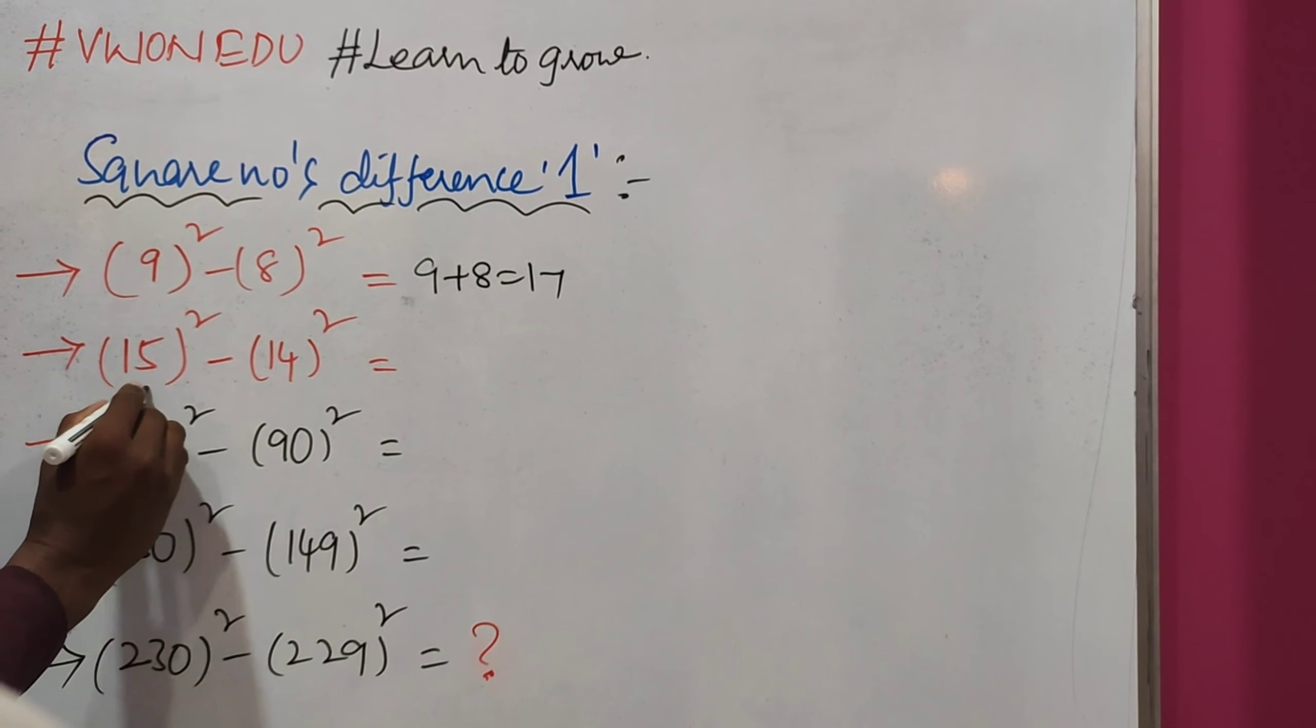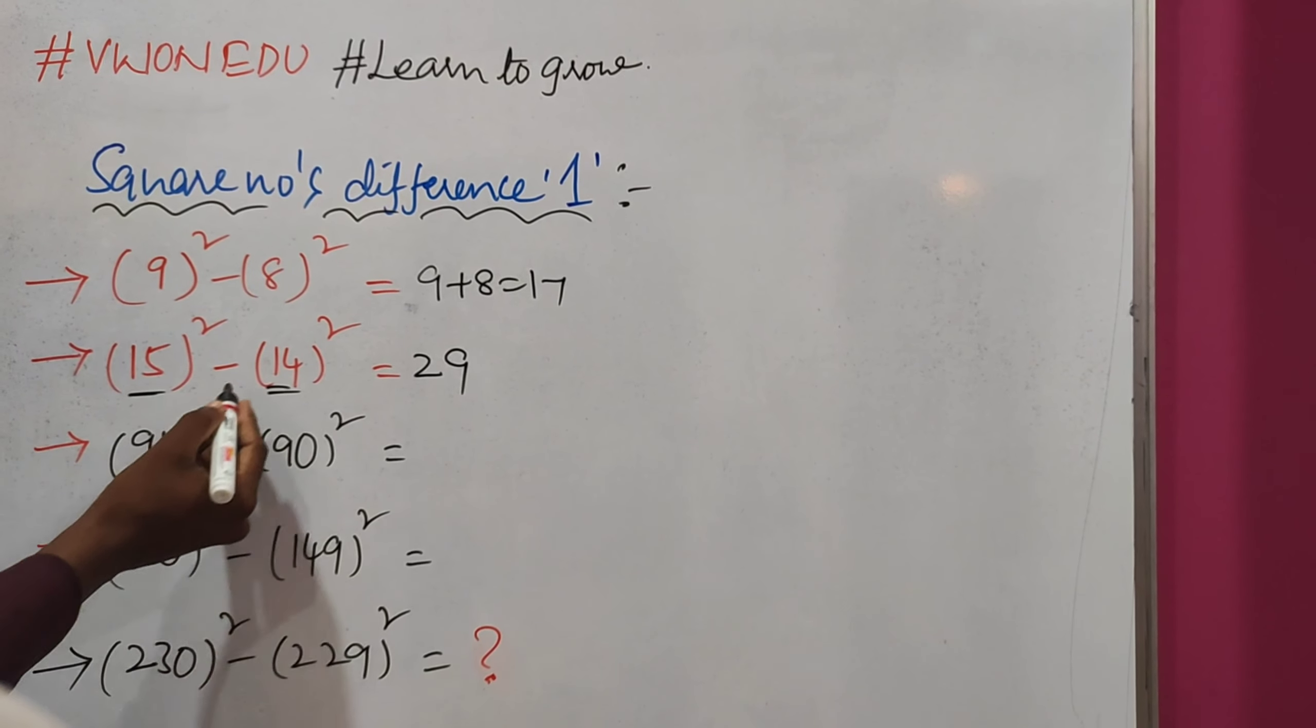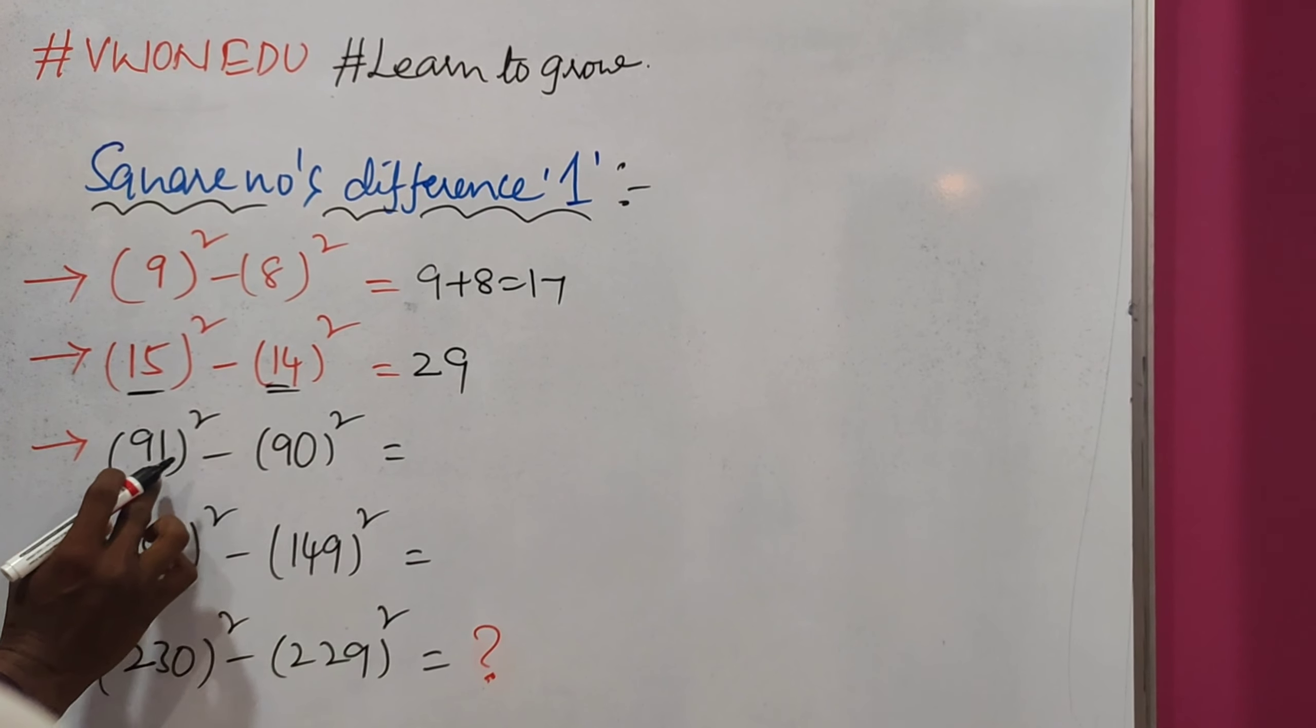91 square minus 90 square is nothing but 91 plus 90, which equals 181.